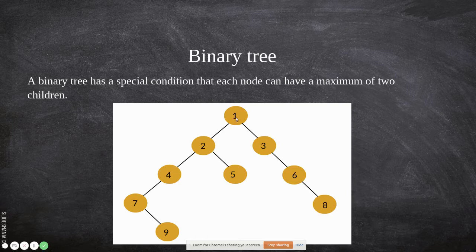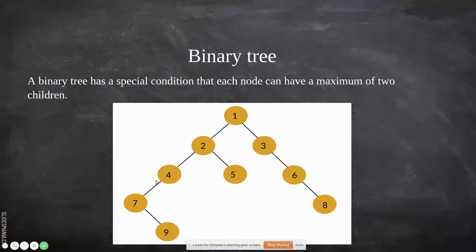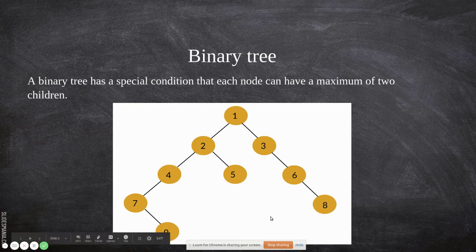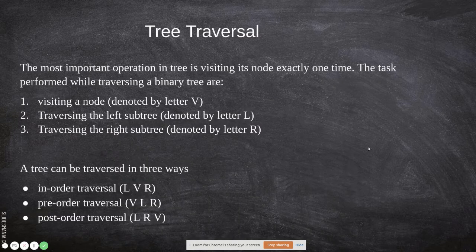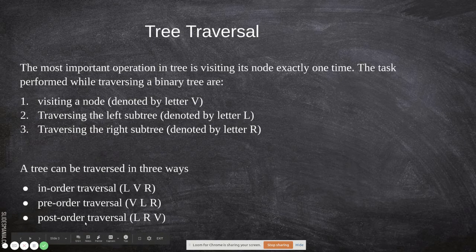Traversal means visiting the nodes — visiting a node and printing its value, then visiting the next node and printing its value, and so on. You visit each node at least once and print all values in the tree. There are three ways you can traverse a tree: in-order traversal, pre-order traversal, and post-order traversal.